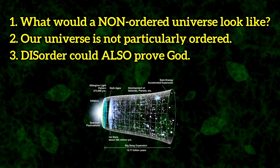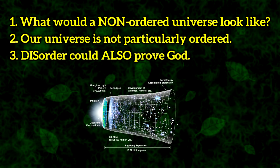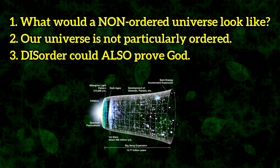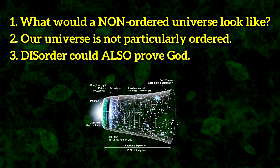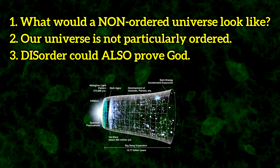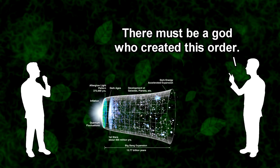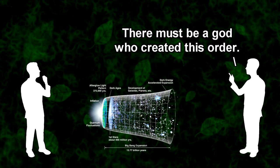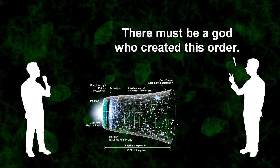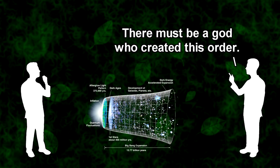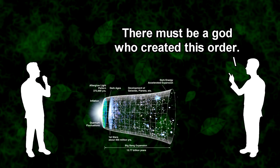And finally, there is the fact that a disordered universe could also be used to prove that there is a God behind it. The argument from disorder, as I've crafted it, is no less plausible than the argument from order. In short, the argument that order in the universe is proof of God is an unfalsifiable just-so story, adaptable to any situation, which proves absolutely nothing.